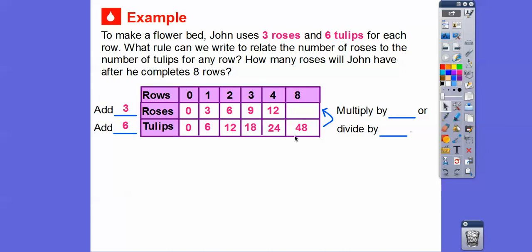Mentally continuing from row four: row five tulips would be 30, row six would be 36, row seven would be 42, and row eight would be 48 — which they give us. Now we need to find the roses at row eight. Notice that tulips are twice the roses in every pair: 12 and 6, 24 and 12. So roses equal half the tulips. Forty-eight divided by two — or 48 times one-half — gives us 24 roses.